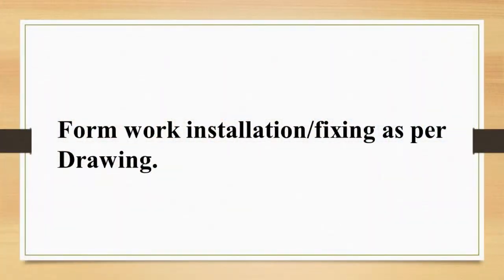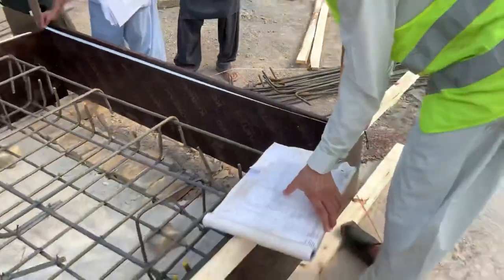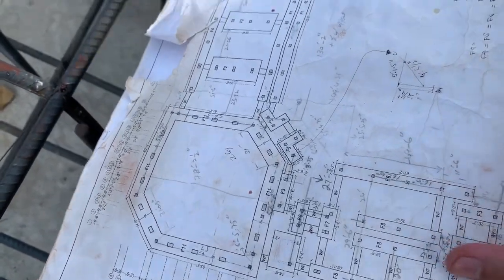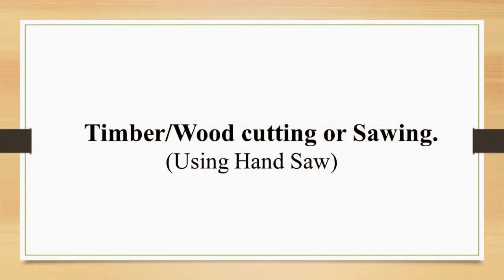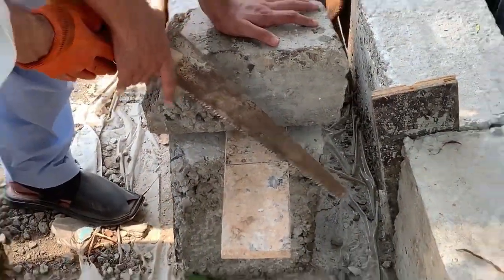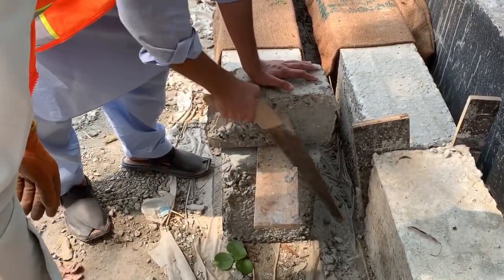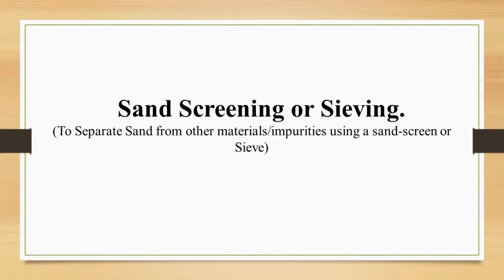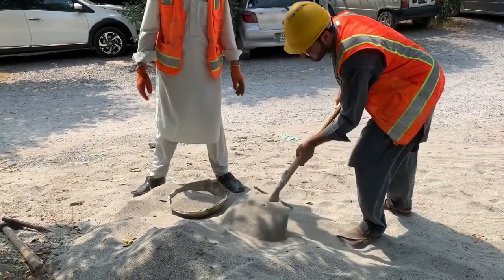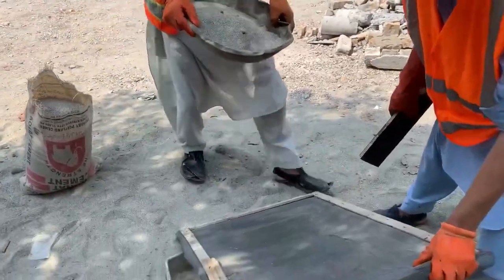Some extra videos show formwork installation and fixing as per drawing. Timber or wood cutting using a hand saw — in this video our colleagues are cutting timber using a hand saw. Sand screening or sieving is used to separate sand from other materials or impurities using a sand screen or sieve. Here, my colleague and I were practicing sand sieving at the Ashraf Yard, UET Peshawar.